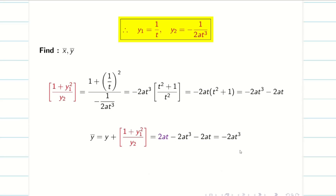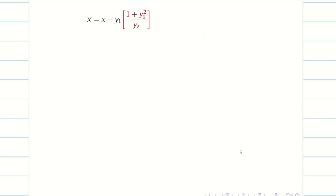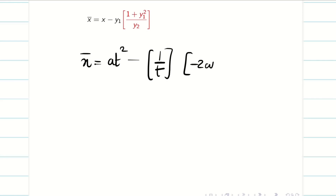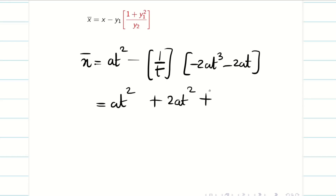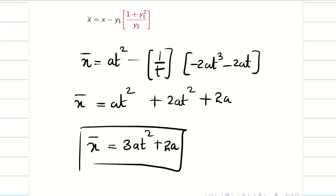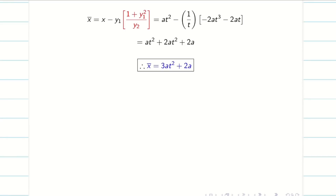Next we have to find x̄. My x̄ = x − y1 × (1 + y1²)/y2. We know x = at², y1 = 1/t, and (1 + y1²)/y2 = −2at³ − 2at. Simplifying: x̄ = at² − (1/t)(−2at³ − 2at) = at² + 2at²  + 2a = 3at² + 2a. So x̄ = 3at² + 2a and ȳ = −2at³. Step 3 is complete.